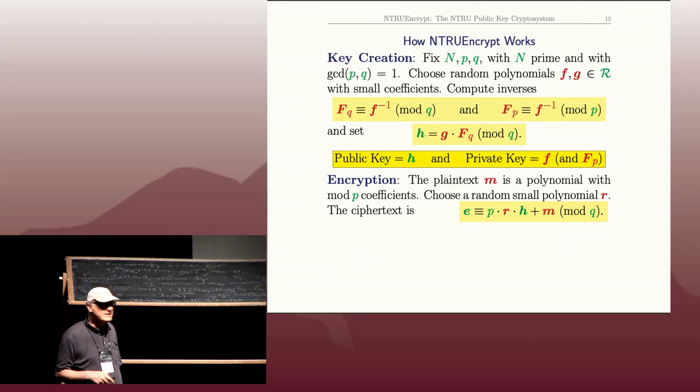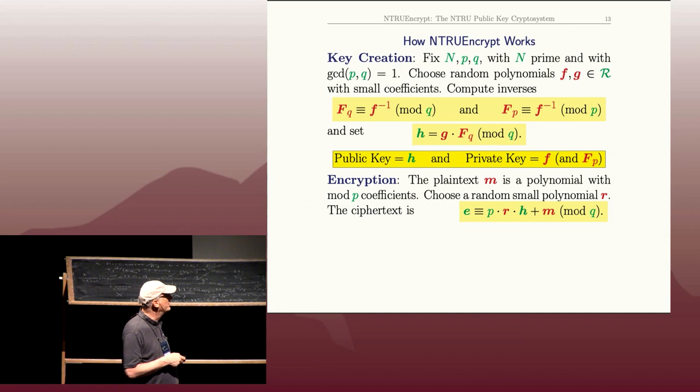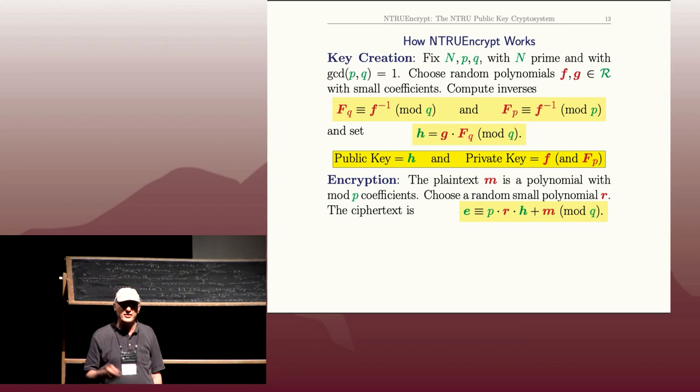And as we've seen in most cryptosystems, there's some randomness introduced. So, he also picks a small polynomial R. Again, random polynomial with 0, 1, minus 1 coefficients. And he forms this quantity.